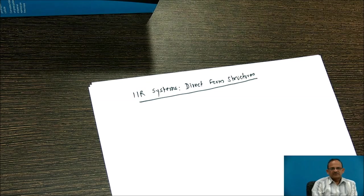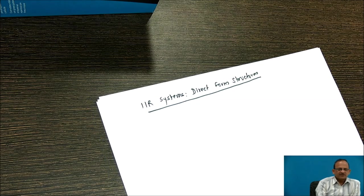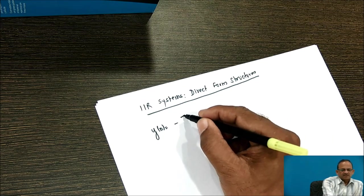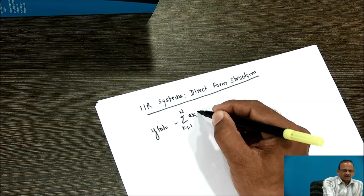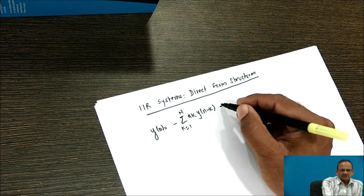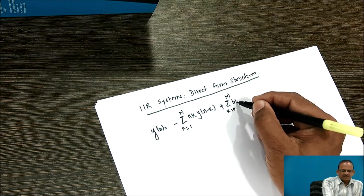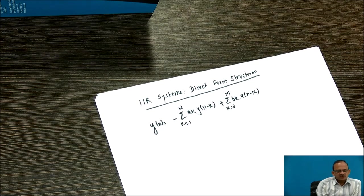Now we will see direct form realization structures for IIR systems. An LTI system is represented by a constant coefficient difference equation: y(n) = minus summation k=1 to N of a_k·y(n-k) plus summation k=0 to M of b_k·x(n-k). This is the generalized constant coefficient difference equation representing an LTI system.